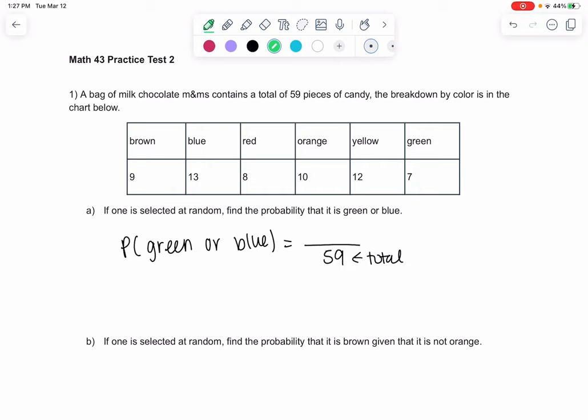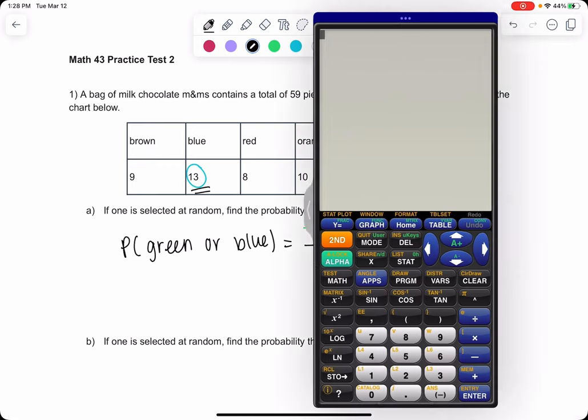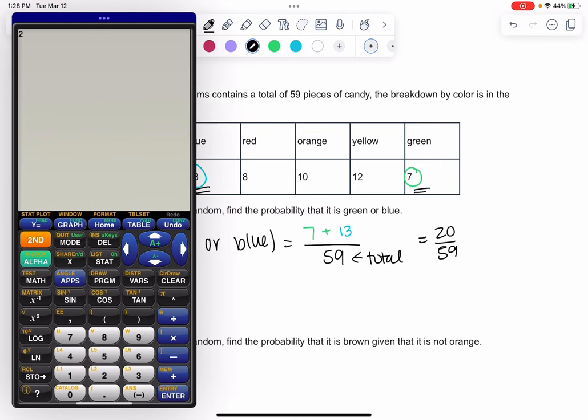So it looks like we have seven greens, or we'll add the blues which is 13. So there's 20 total candies it could be - any of the blues or any of the greens, 20 out of 59, which leads us to 0.3389 which will round up to 0.3390. We like four decimal places for proportions.